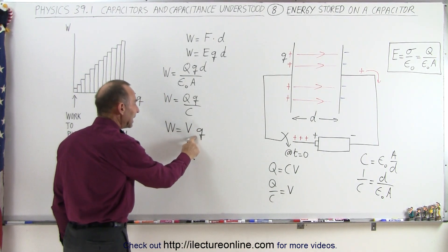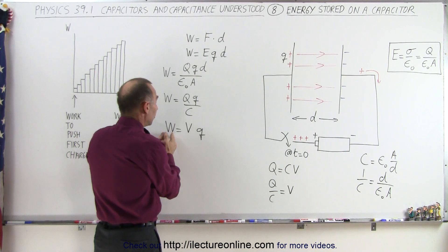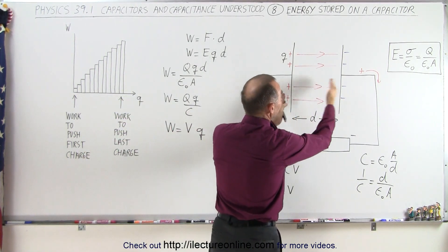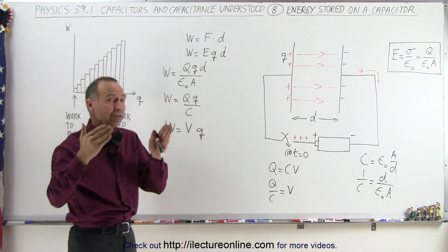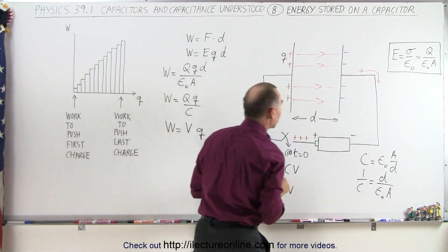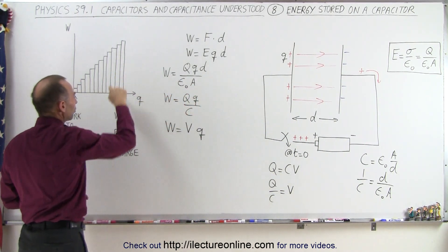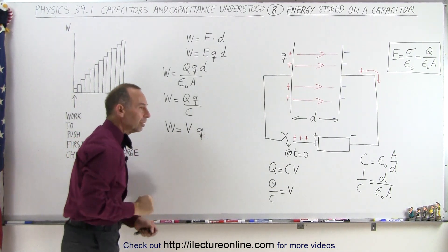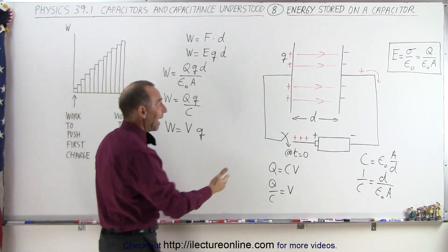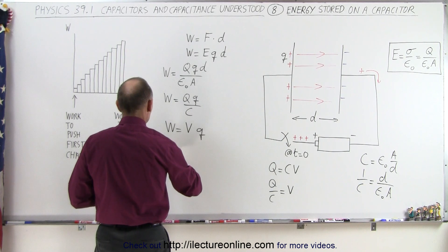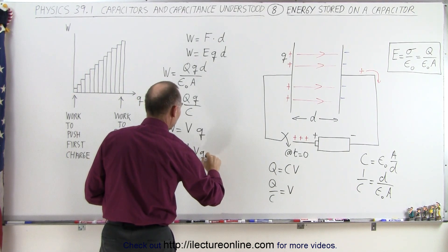That's the work done for each particular charge placed onto the capacitor. Initially, the work done is virtually zero, because the voltage across the capacitor is virtually zero since there's virtually no charge on it. But eventually, when you put the last charge on there, the voltage across the capacitor will be equal to the voltage across the battery — that will be the most amount of work required. Since there is a linear relationship between the amount of work done and how much charge is there, you can say that on average you can take half the voltage. When you're at the halfway point, the work on average to put one charge on the capacitor will be one-half the voltage times that charge.